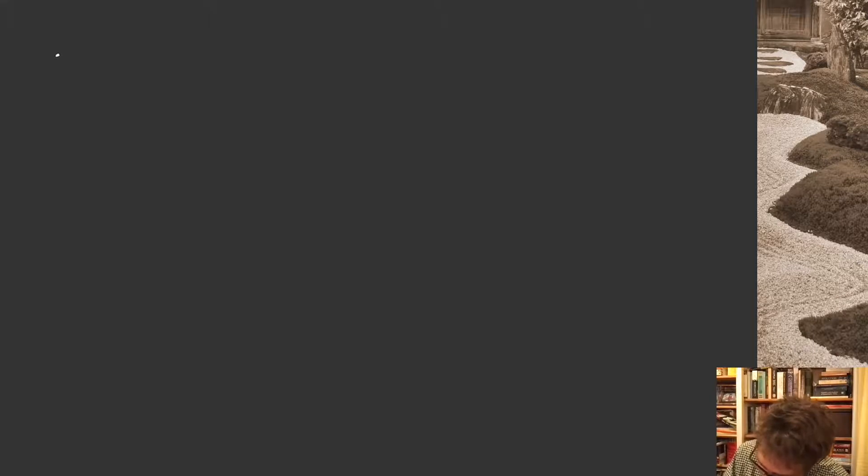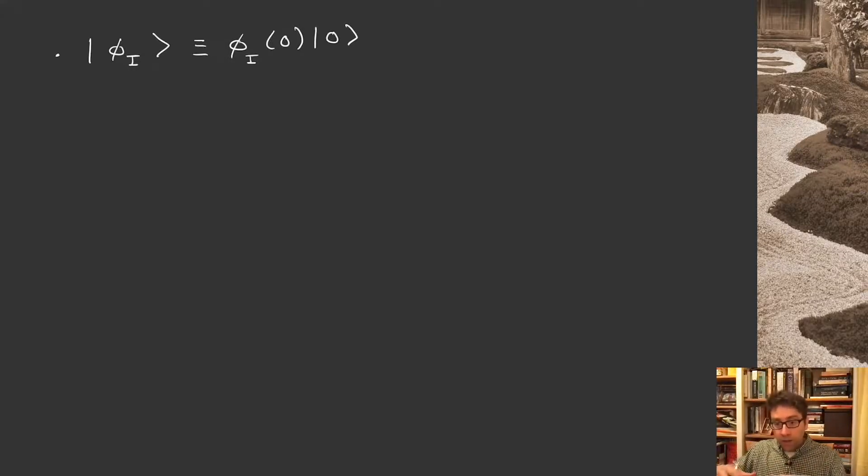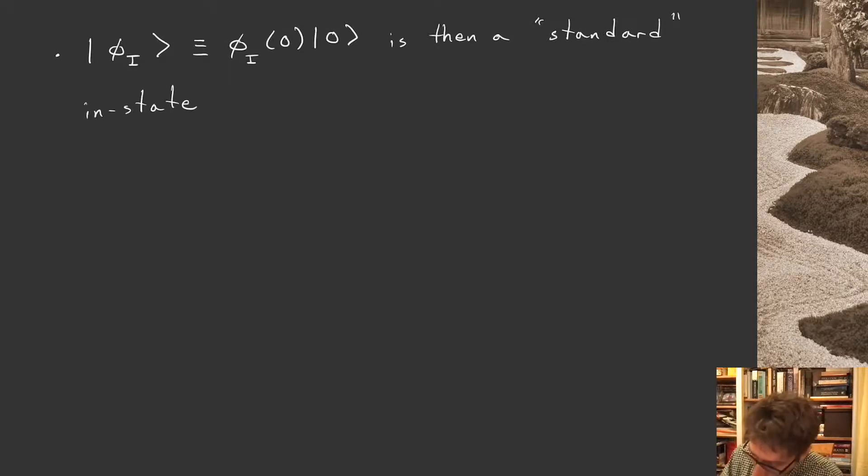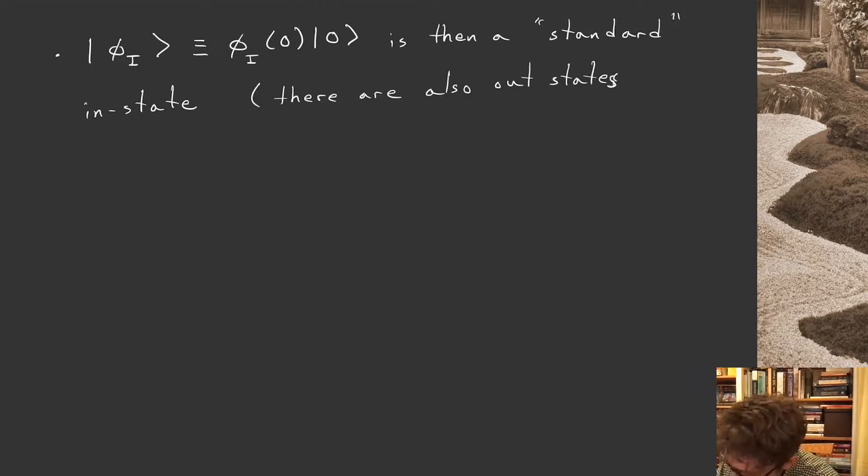So given that, remember I had my notion of a conformal primary state from a few lectures back, which was given by acting on the vacuum with a conformal primary operator at the origin. This was, if you will, a definition. In our new perspective as radial coordinate as time, this is then a standard, let's put it in scare quotes because it really isn't standard, but I'll say it anyway, it's a standard in-state. And we can also put in parentheses, there are also out-states that we get by acting with operators at large radial distance. Out-states created by acting with φ_i(x) at large radial distance.